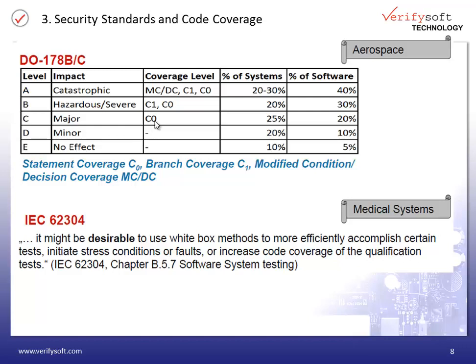For level B, C1 coverage, which is branch coverage, needs to be achieved. And for level C, major impact, all statements have to be tested. The standard IEC 62304 for medical devices is a bit vague about code coverage. It is only written that it might be desirable to use white-box methods to more efficiently accomplish certain tests or increase code coverage of the qualification tests.